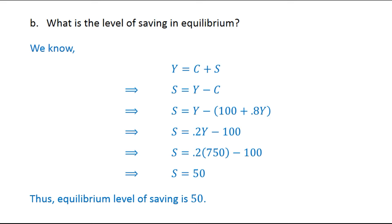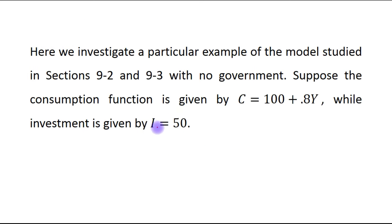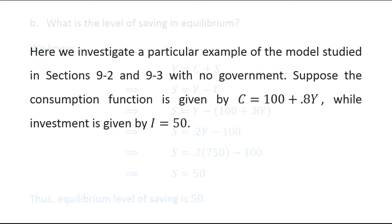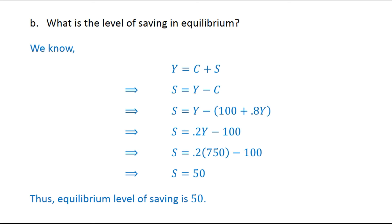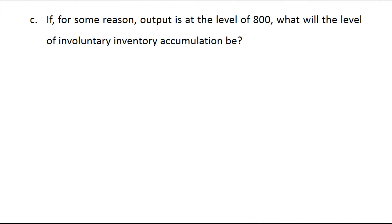We also know that in a two-sector economy, savings is equal to investment at the equilibrium level. This condition is also fulfilled in our case — savings, which equals 50, is equal to investment.